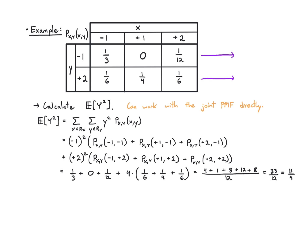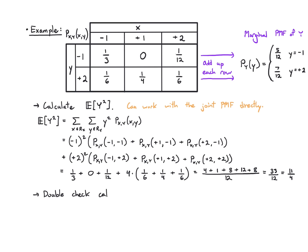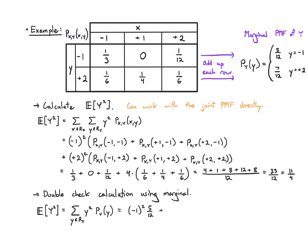We can also compute the marginal of y by summing the rows: 5/12 for the first row and 7/12 for the second. As a double-check, using just the marginal: E[y²] = (−1)²·(5/12) + (2²)·(7/12) = 5/12 + 28/12 = 33/12 = 11/4. This confirms the double summation gave the correct answer.